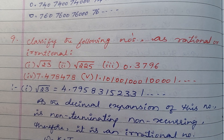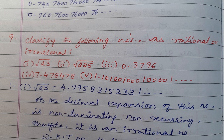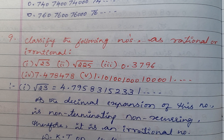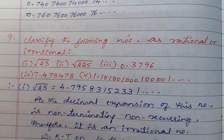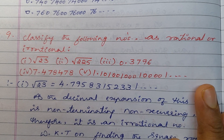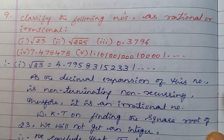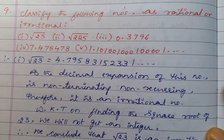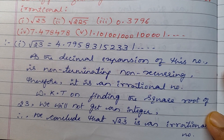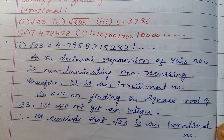Answer for the ninth question, first one: square root of 23. On finding the square root of 23, we get 4.795831523... and so on. This is non-terminating and the digits do not repeat, so it is non-recurring. As the decimal expansion of this number is non-terminating and non-recurring, therefore it is an irrational number. We know that on finding the square root of 23, we will not get an integer. Therefore, we conclude that square root of 23 is an irrational number.